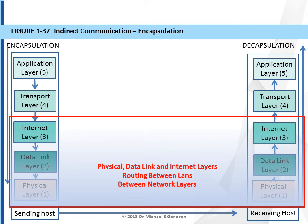As we continue the process of encapsulation or decapsulation, we add further functionality to that message. When we take the physical layer, data link, and internet layers together, we are able to route between local area networks, and therefore these can be referred to as the between-network layers, because taken together they can do the job of not only communicating within a local area network, but also communicating across multiple local area networks using IP addresses found at layer 3.